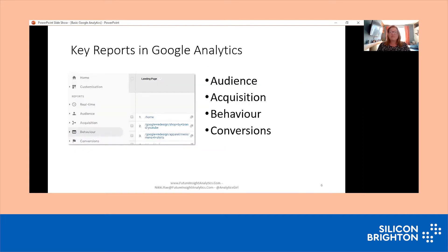In my mind, there are four main reports in Google Analytics: audience, acquisition, behaviour, and conversions. You can find these on the left-hand side of Google Analytics once you've opened it. Audience is information about the people that go to your site — are they new versus returning, what's their age, which city are they from? That kind of information.